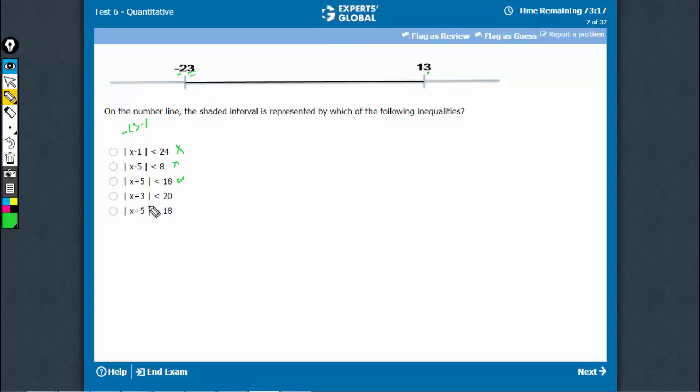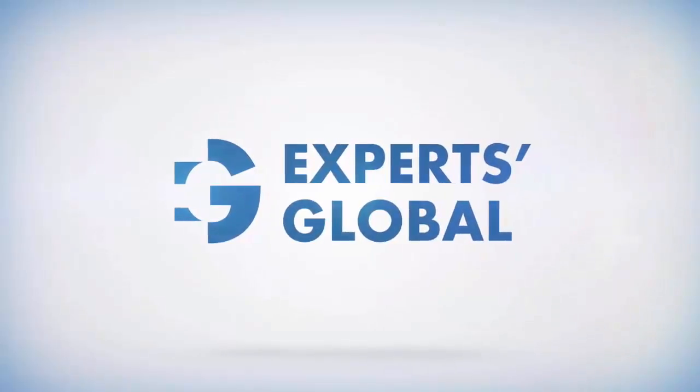But coming to 13, 13 plus 3 is 16. 16, 20 not equal, so can't be correct. Similarly here, 13 plus 15, 16. 16, 18 not equal, cannot be correct. That's the right answer.